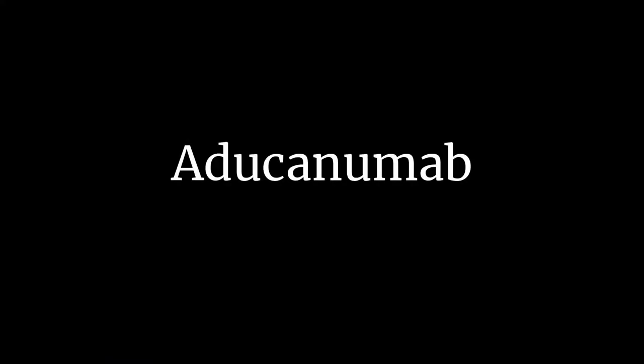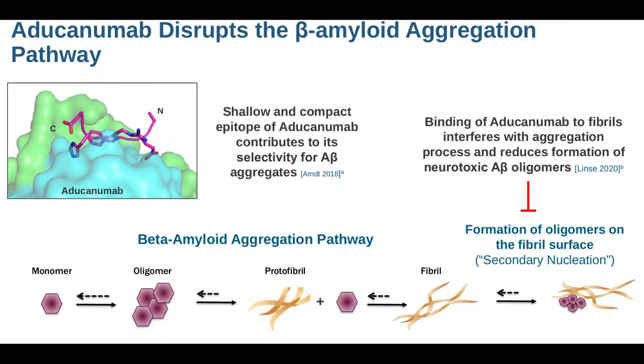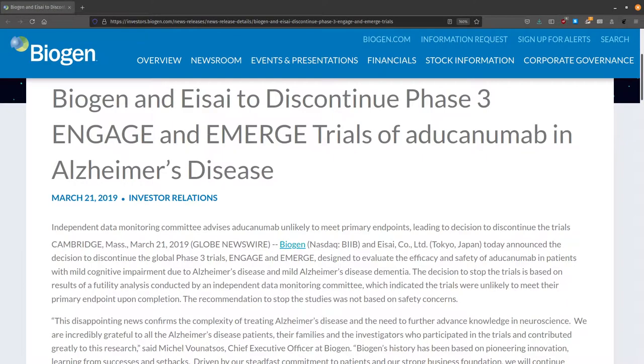Enter aducanumab — and no, I don't know how to pronounce it correctly. The year is 2019. Biogen is testing a monoclonal antibody treatment against amyloid beta. Two trials, Emerge and Engage, are terminated early due to a futility analysis. The end.